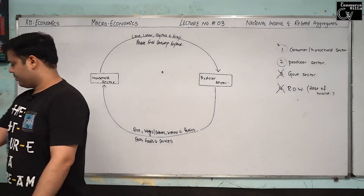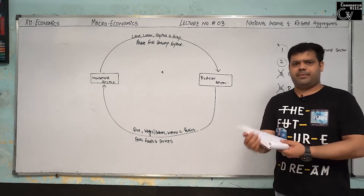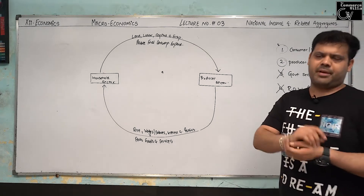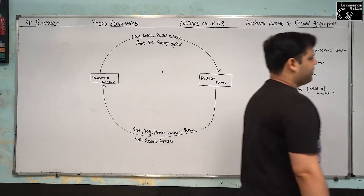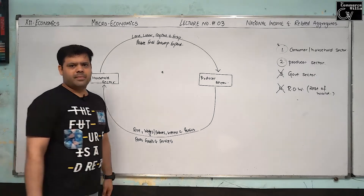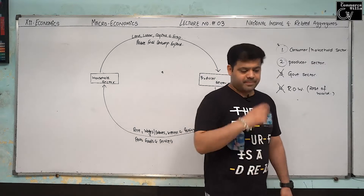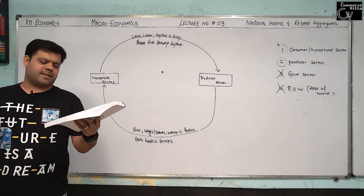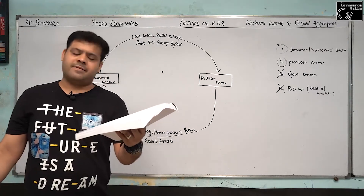Please underline 'closed economy.' There are two economies: open and closed. India is an open economy, but here we consider it closed for the time being. Closed economy refers to the economy in which there is no ROW — rest of the world sector. It is the simplest form of closed economy in which there are only two sectors: household and firms. Household sector supplies factor services to firms, and firms hire factor services from households.